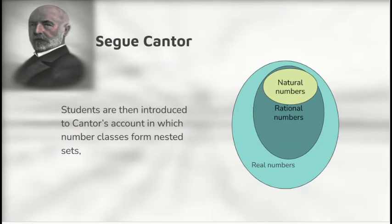Now, after that, students will be introduced to Cantor's theory, according to which numbers fall into classes. The class of real numbers is the biggest. Within that, you get the rational numbers as a subset. And within those, you get the natural numbers as a subset.